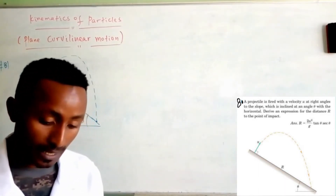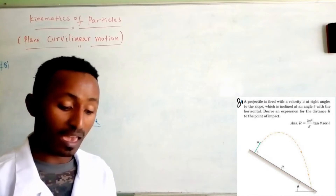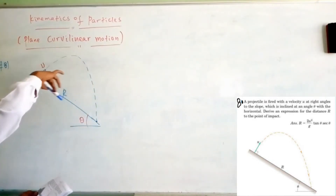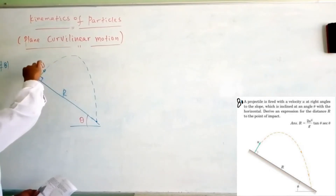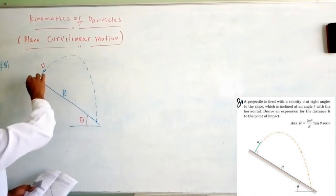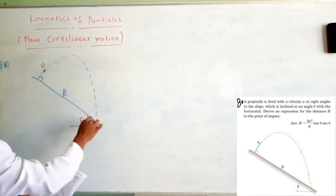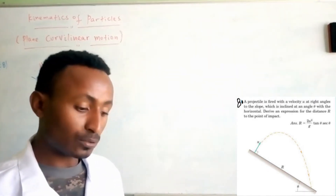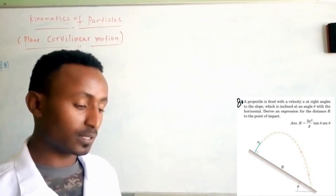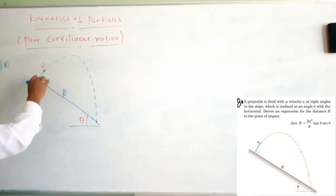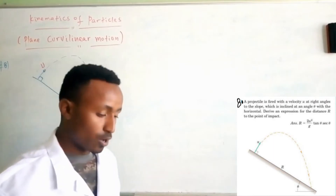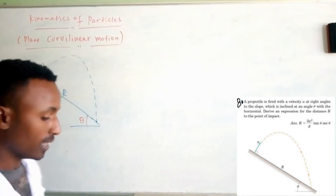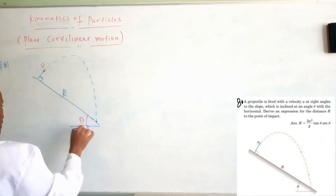A projectile is fired with a velocity in projectile motion. The initial point is here, the final point, the target motion. At right-angle to the slope, the slope motion, right-angle, firing the target motion, which is inclined at an angle theta with the horizontal line.